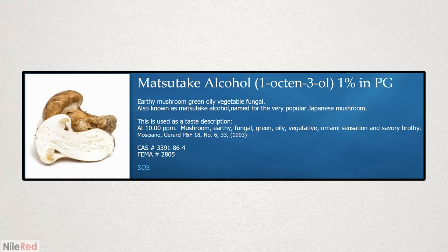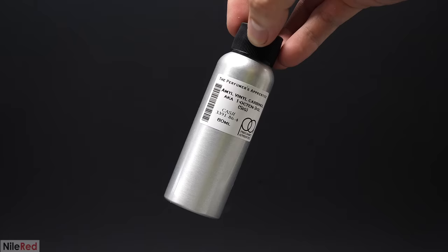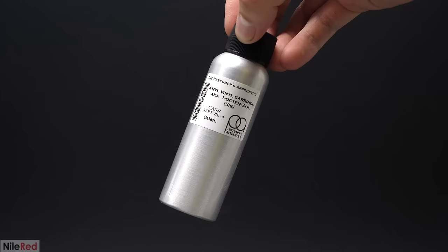Now to actually get the 1-octen-3-ol, it's pretty easy because it's often sold as a perfume additive. Oddly enough, it's a natural and major component of mushroom odor and it has a fungal and kind of earthy smell to it. I ended up picking it up online from a website called The Perfumer's Apprentice and I got 80 mils of it for $20 US.